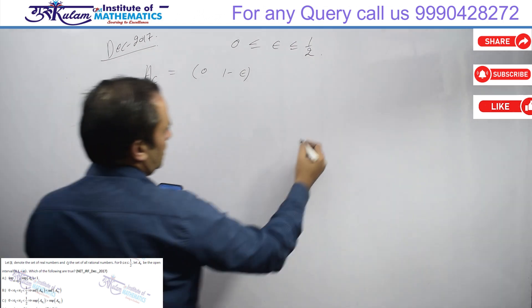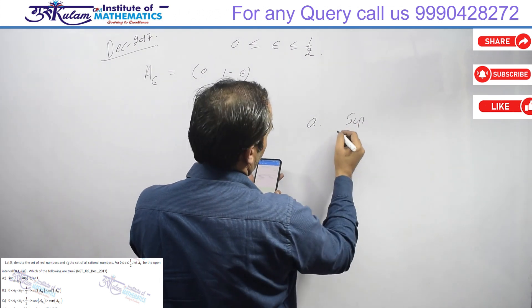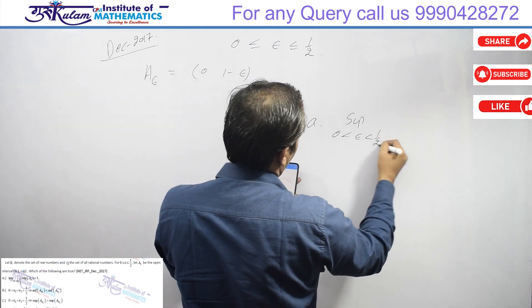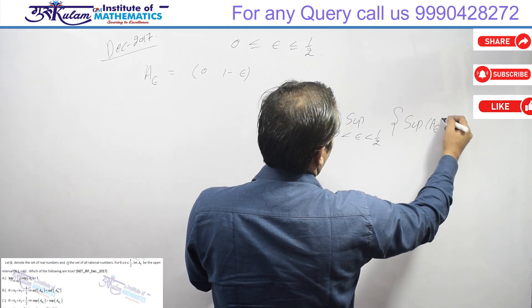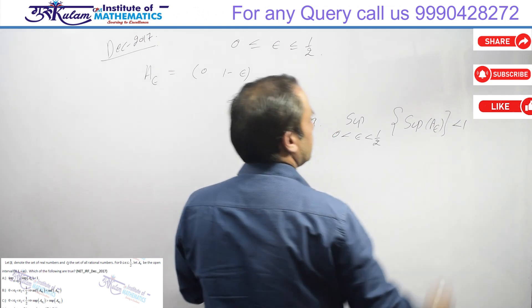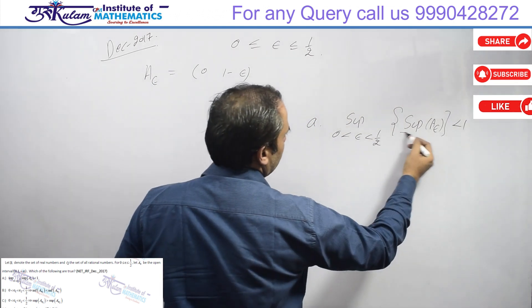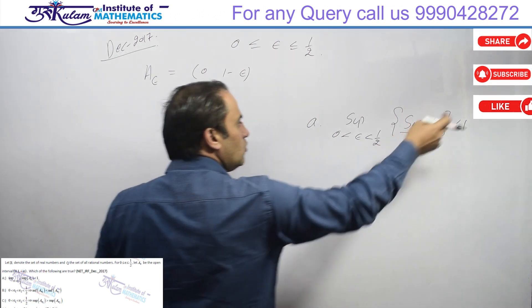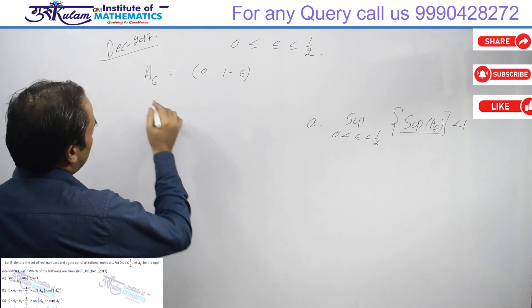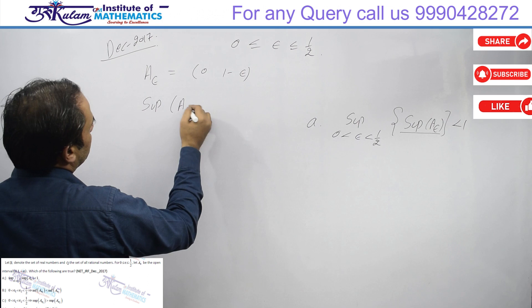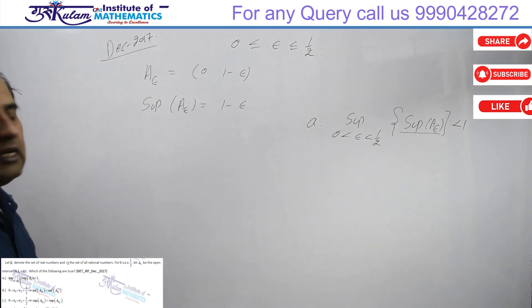The first option asks about 0 < epsilon < 1/2. The supremum of A_epsilon: since A_epsilon is an open interval (0, 1 - epsilon), the supremum of A_epsilon is definitely 1 - epsilon, because it is an open interval whose upper bound is 1 - epsilon.